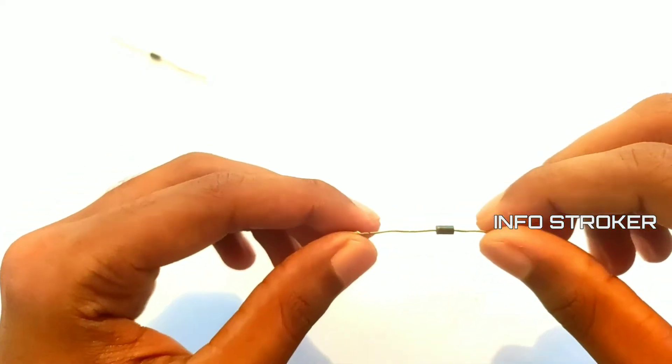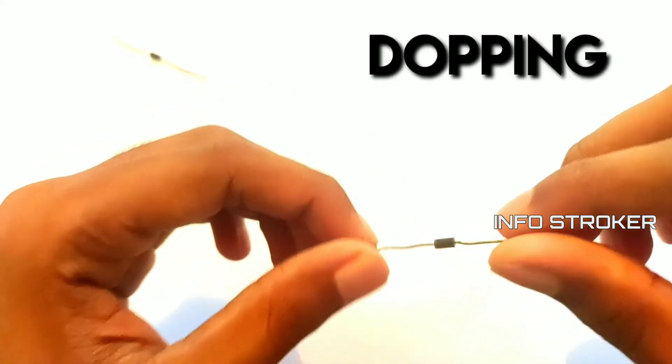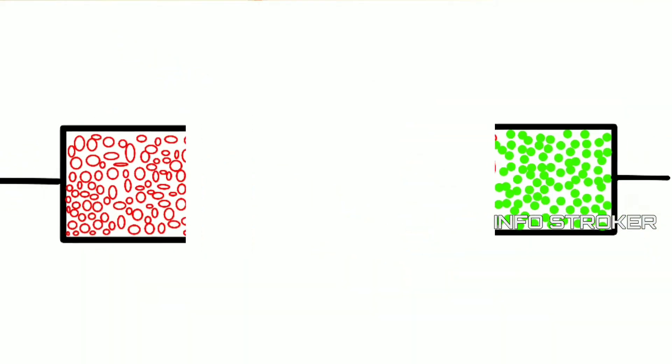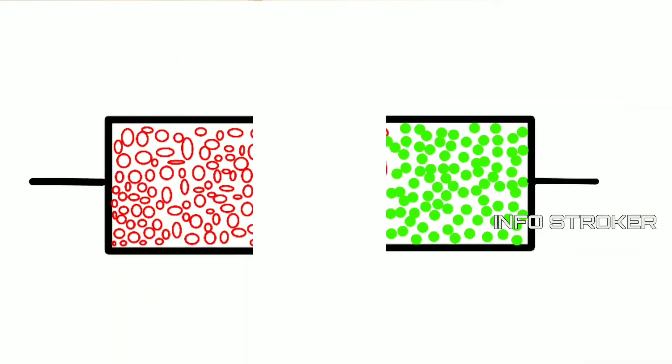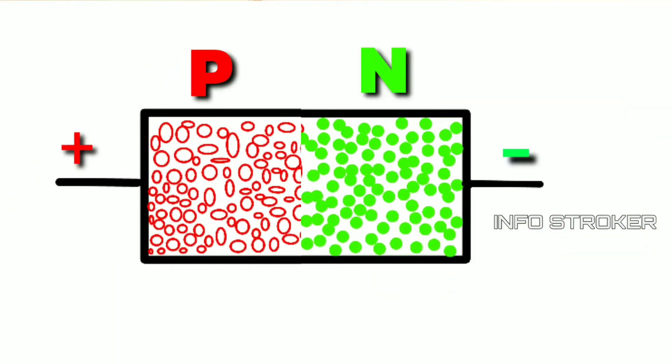This is the process of doing the doping. This is a P-type semiconductor and N-type semiconductor. We can connect a P-N junction diode.